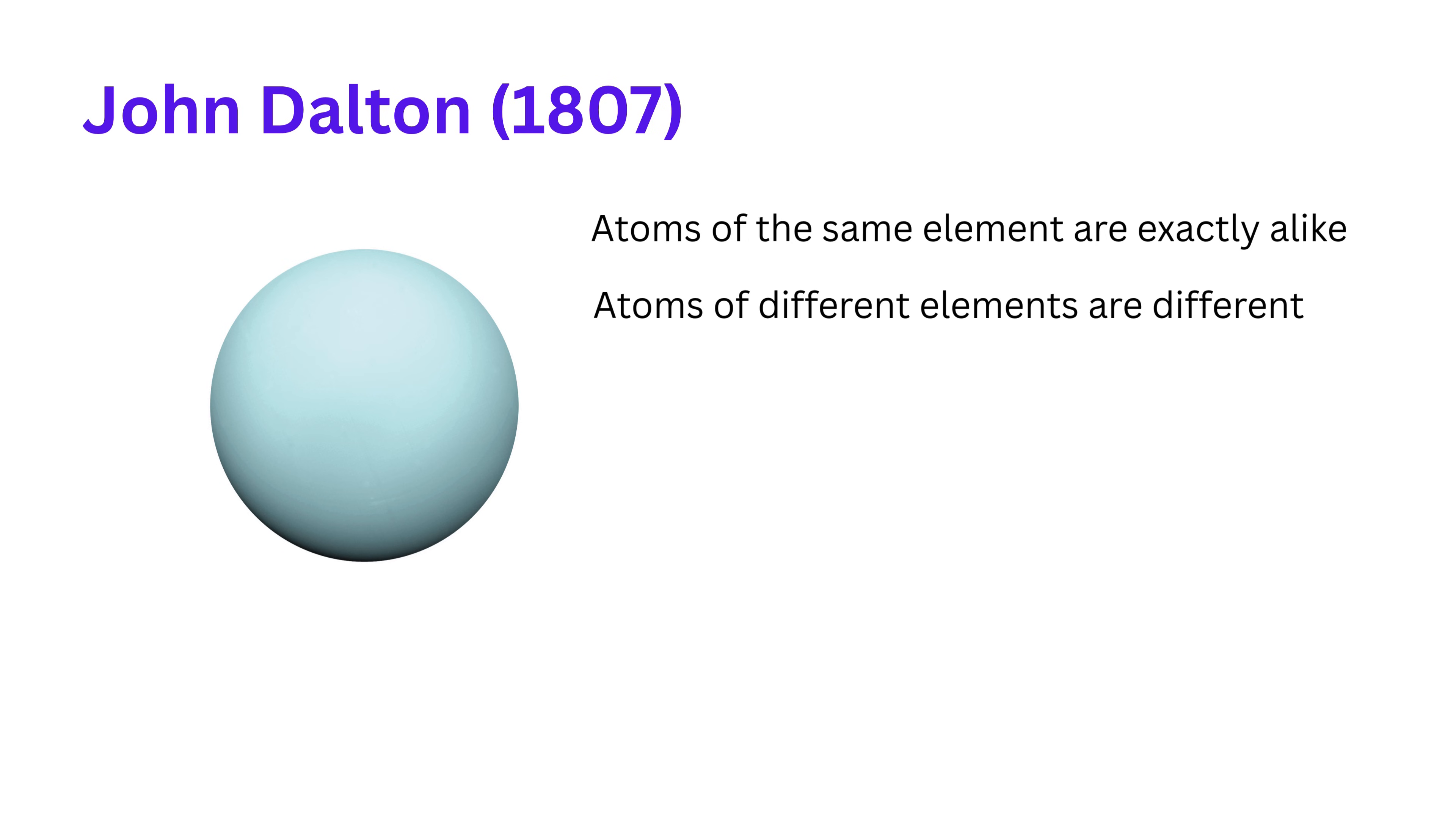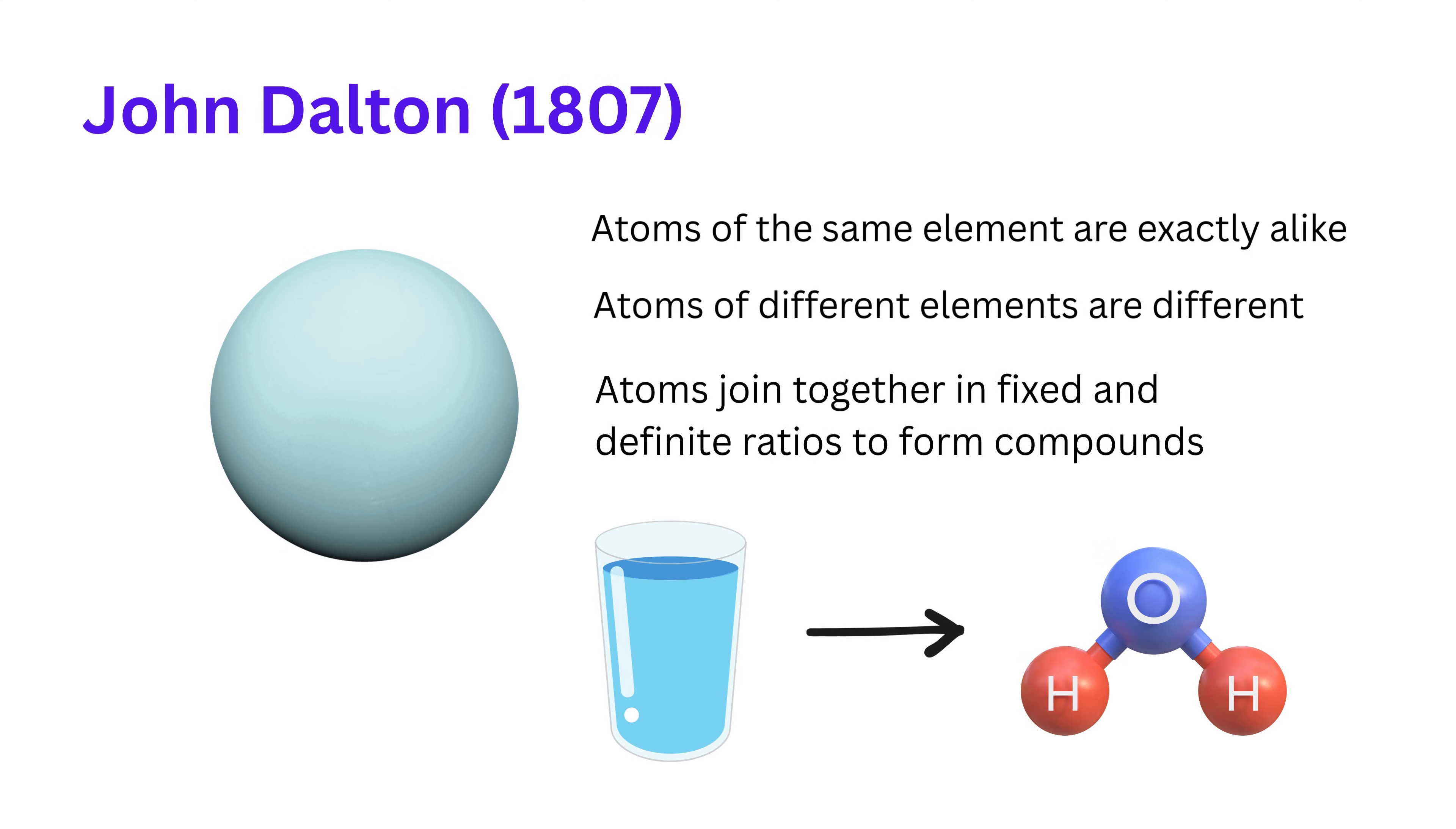He also said that atoms join together in fixed and definite ratios to form compounds. For example, water is always made of two hydrogen atoms and one oxygen atom. Dalton's model gave us a very solid start in the world of chemistry.